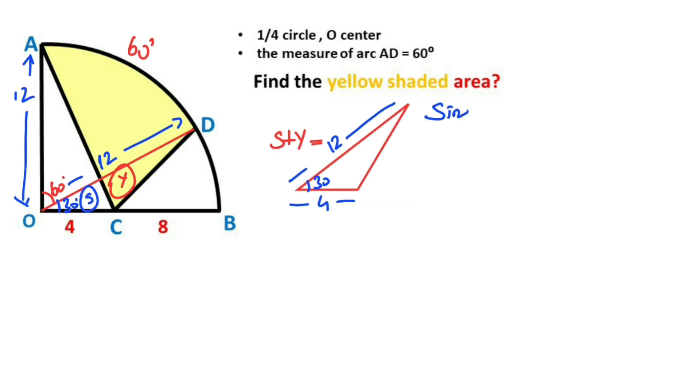If we use the sine formula, we can find this triangle area. One-half times 12 times 4 times sine 30. We know that sine 30 equals one-half, so S plus Y equals 12 units squared.